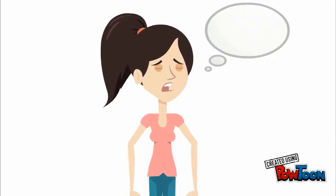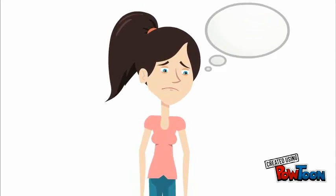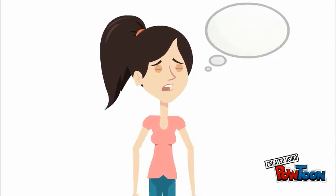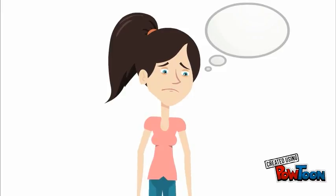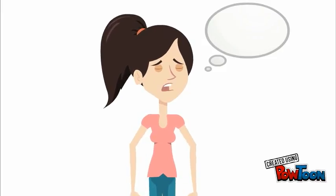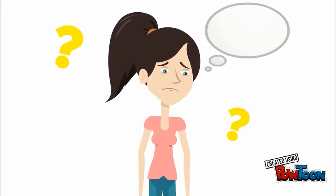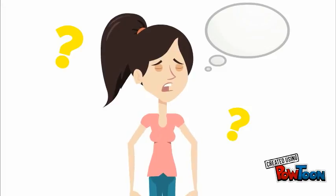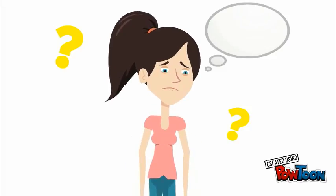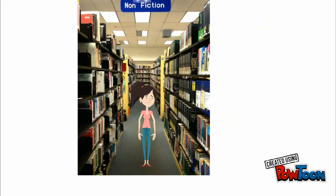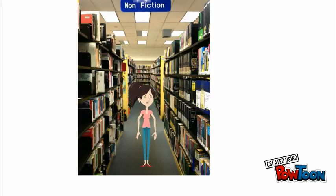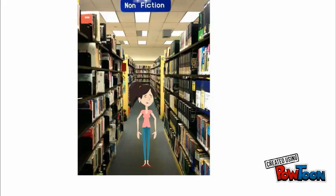I have a research paper for my sociology class, but I have no idea where to look in this library. Where are all the books about sociology? Have you ever been lost in the library like this student? Isn't it frustrating when you don't know how to find the section that has the type of books you are looking for?